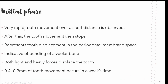In the initial phase, there is very rapid tooth movement over a short distance. After this, the tooth movement then stops. It represents the tooth displacement in the periodontal membrane space and is indicative of the bending of the alveolar bone. Both light and heavy forces can displace the tooth, and 0.4 to 0.9 millimeters of tooth movement can occur in a week's time.